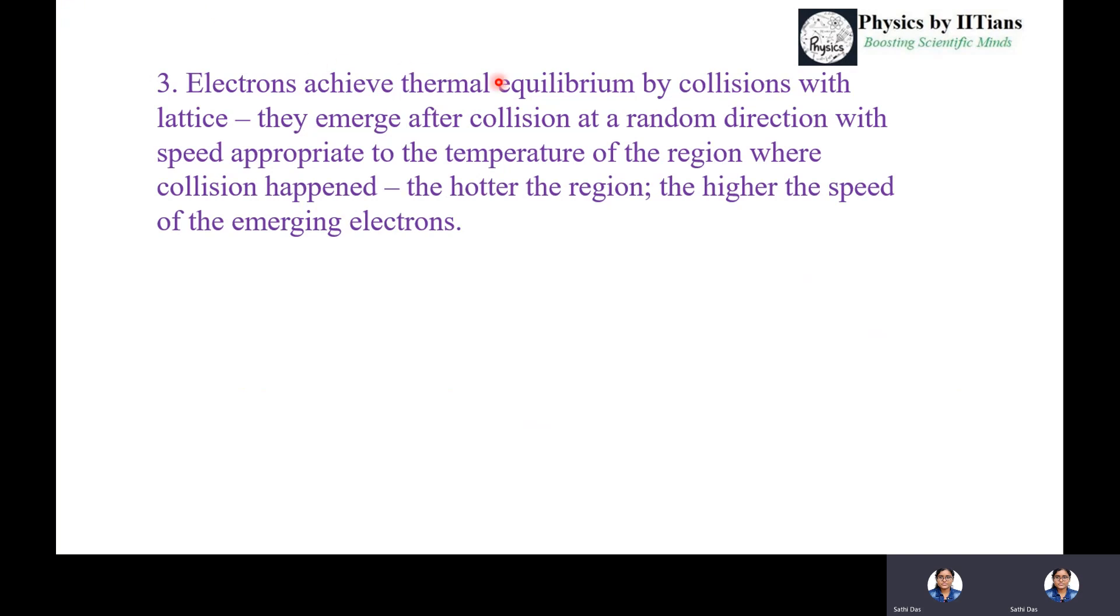The third assumption: electrons achieve thermal equilibrium by collisions with the lattice. They emerge after collision in a random direction with speed appropriate to the temperature of the region where collision happened. The hotter the region, the higher the speed of the emerging electron.